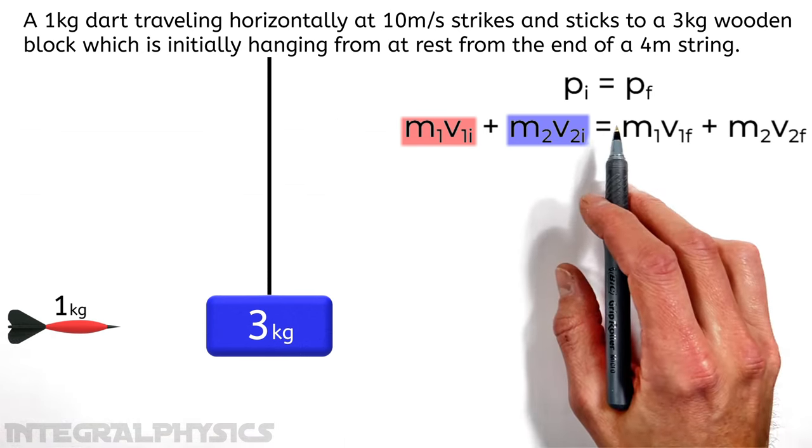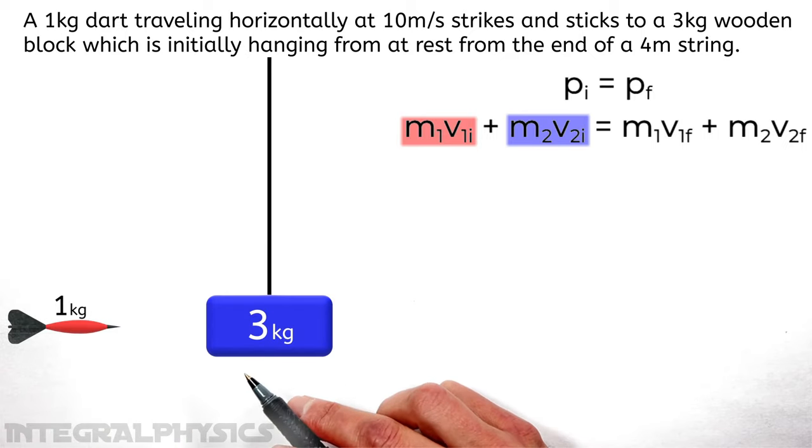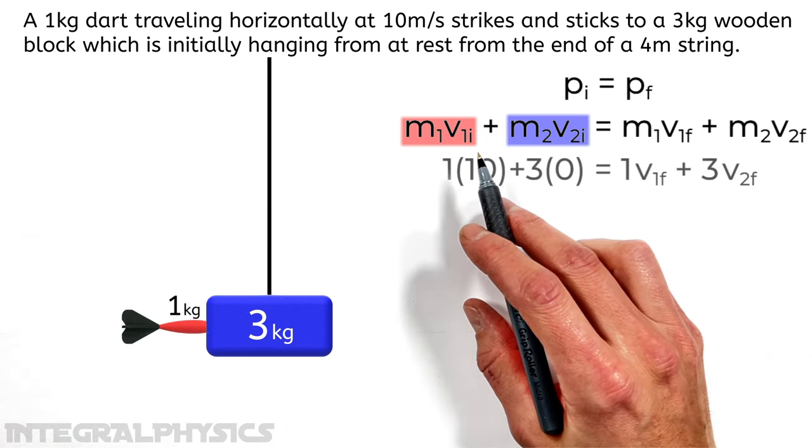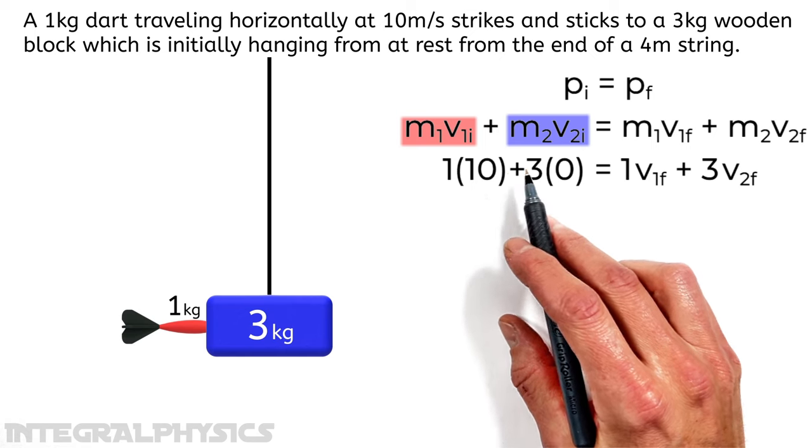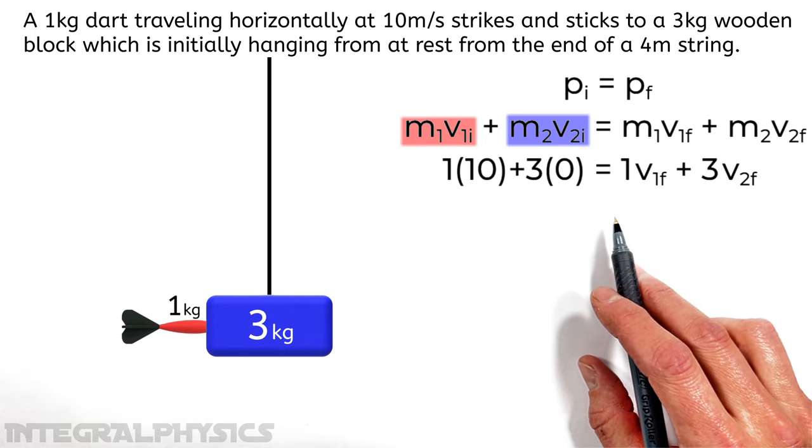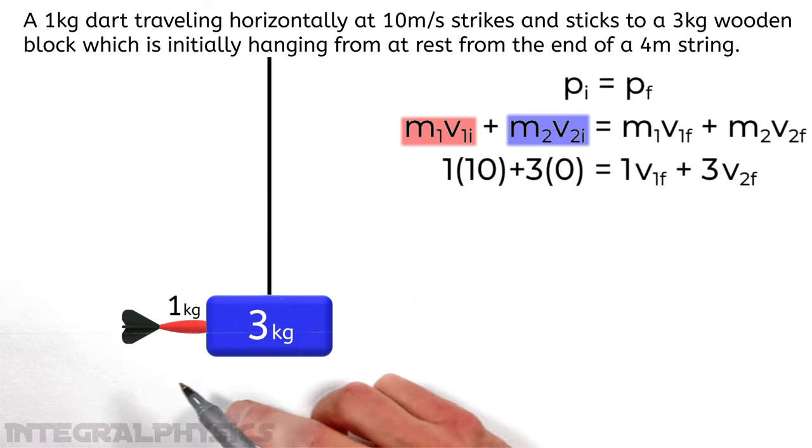Now in the problem, it's stated that our one kilogram dart is moving along at an initial velocity of 10 meters per second when it strikes the stationary block. So plugging both the mass and velocity in for our dart up here, as well as for our block, we can set that equal to the final momentum of our system, that is the dart and the block.